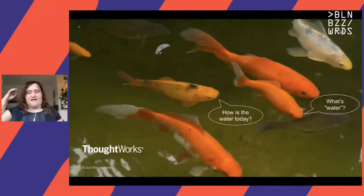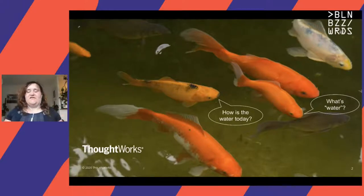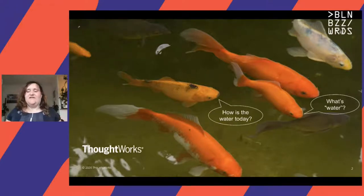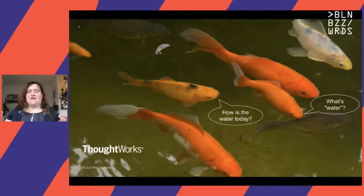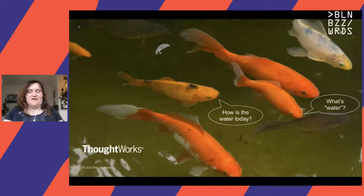Whenever I talk about data and data quality with engineers, I sometimes feel a bit like the fish in this story. There's an older fish meeting a younger fish in the water, and the older fish asks, 'How is the water today?' The younger fish is very confused, asking 'What is water?' Sometimes those of us who work a lot with data have the same feeling — we're so immersed in our data and technology that we're not always precisely clear about what exactly we're dealing with.